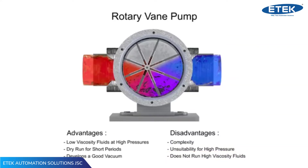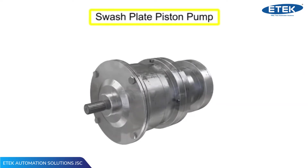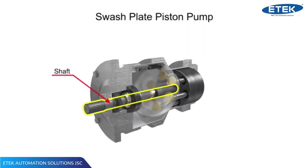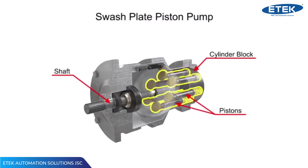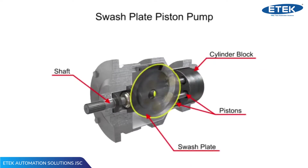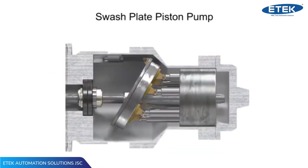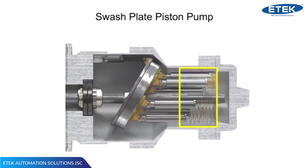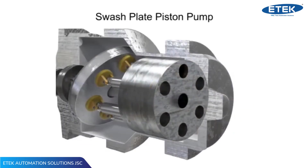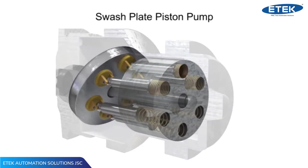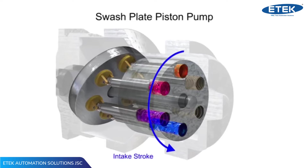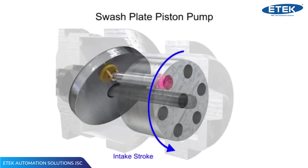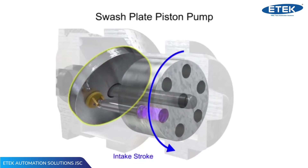Piston pumps come in many different forms. A swash plate is a device used to translate the motion of a rotating shaft into the reciprocating motion of a piston. Swash plate piston pumps have a rotating shaft connected to a cylinder block containing pistons, which are pressed against a stationary swash plate that sits at an angle to the cylinder. As the shaft rotates, the pistons move against the swash plate, causing them to reciprocate within the piston block. The pistons create a vacuum that forces fluid in during half a revolution and expels fluid during the other half. On the intake stroke, a spring ensures the pistons pull back and maintain contact with the swash plate, causing fluid to fill the empty cavity left behind.